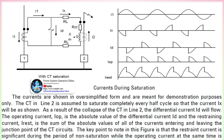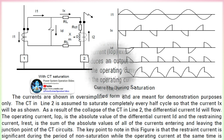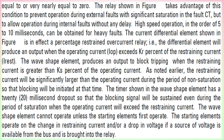A percentage restrained differential relay takes cognizance of the fact that there may be error current in the differential circuit. The relay will operate when the differential current ID is greater than some percentage of the total restraint current. The amount of restraint is generally adjustable. The characteristic of the relay is such that as the restraint becomes larger, so does the operate or difference current required to produce an output, producing the characteristic slope dependent on the percentage restraint setting.